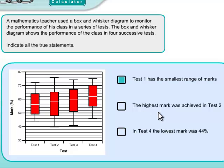For part two, the highest mark was achieved in test two. So we're just looking at test two. Is the top whisker higher than all the others? Yes, it is. So that one was relatively easy. We say yes to that.